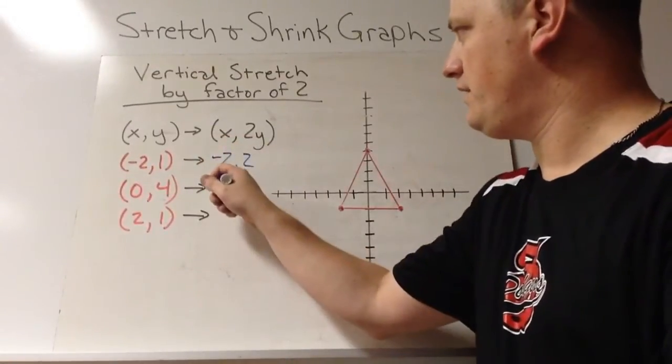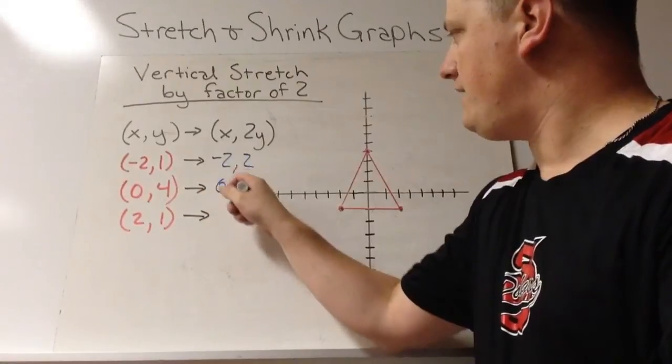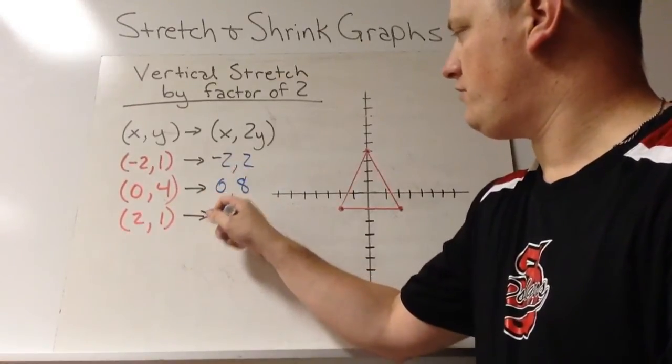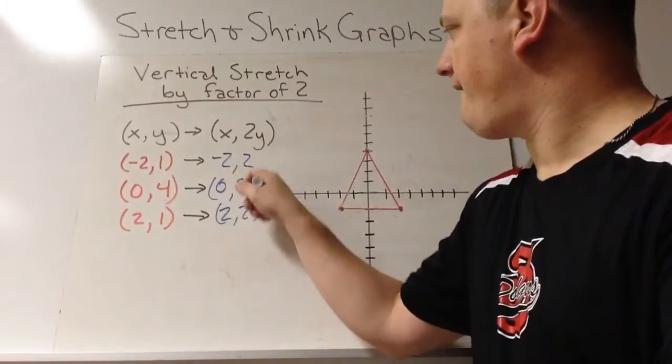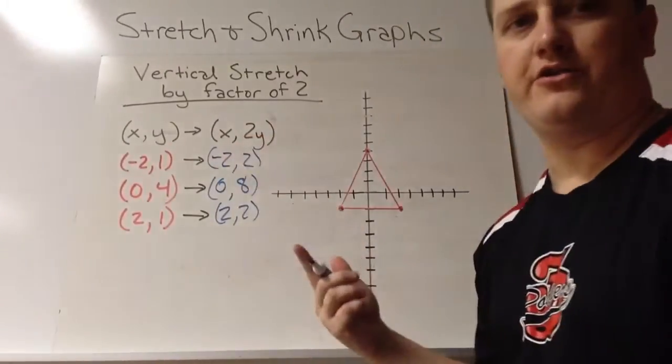So we get negative 2, 2, 0, 8, and 2, 2. So now I just graph those. There's 0, 8.